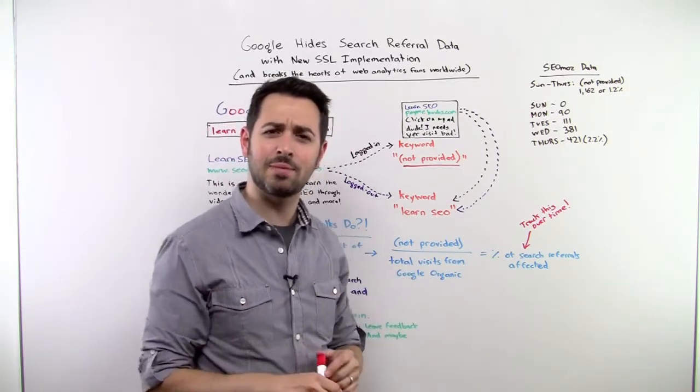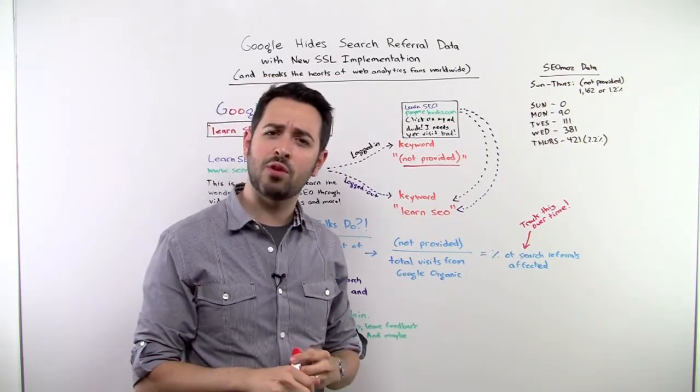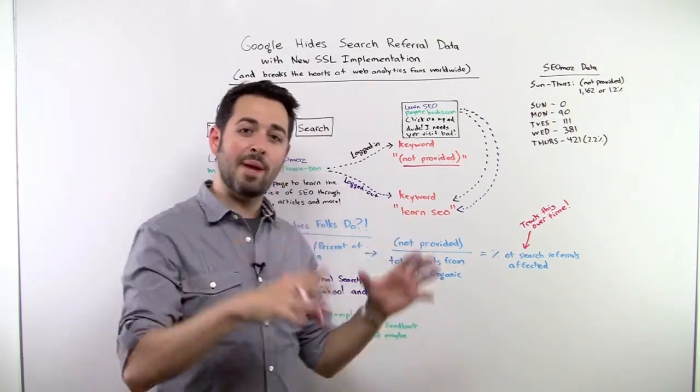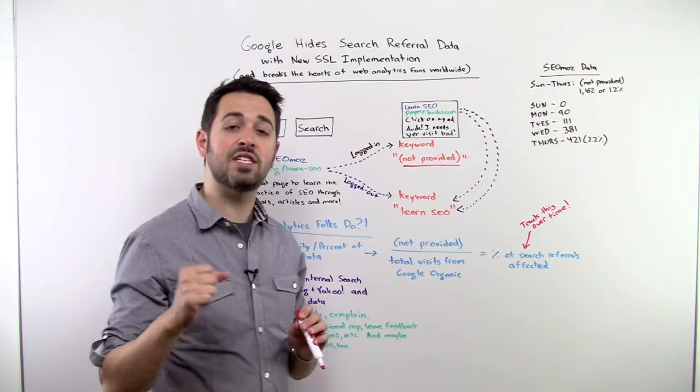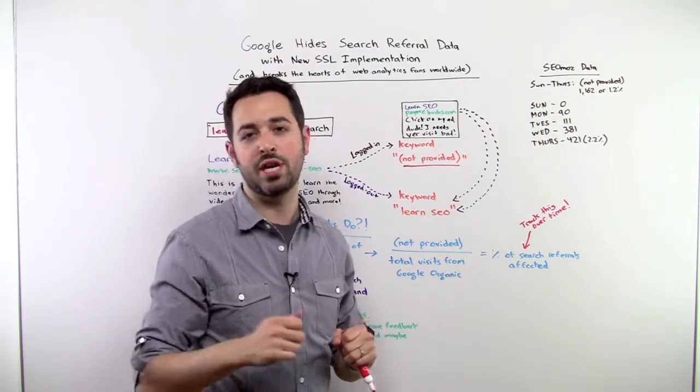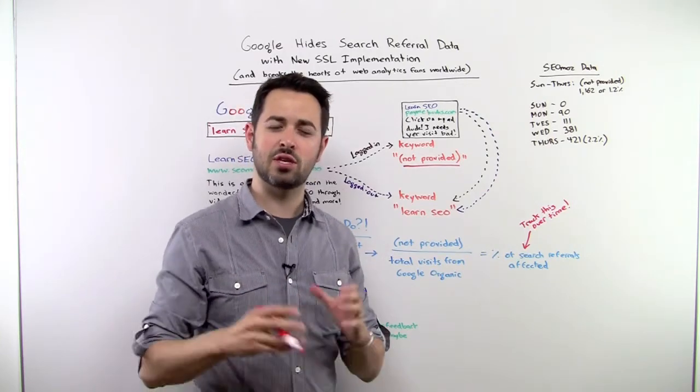And so Google is hoping to remove that ability and be the only ad network that can be aware of your search behavior, thus sort of blocking out other providers using their near monopoly in search to exclude other people from being able to use this data. That's frustrating. It's sad. It's upsetting. It certainly doesn't fit with what we know about Google.